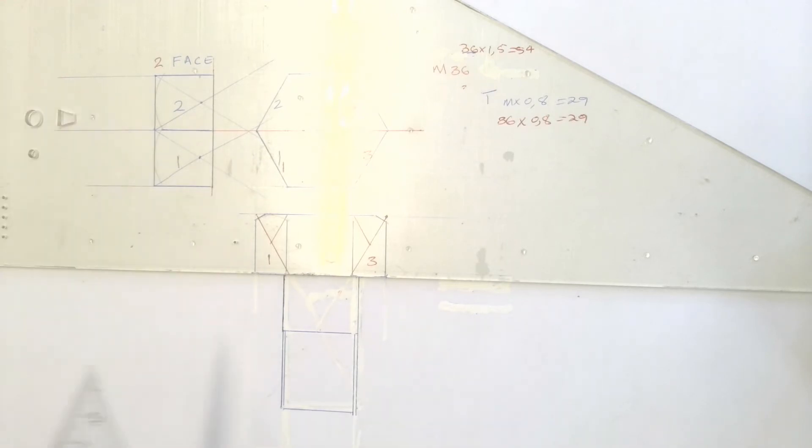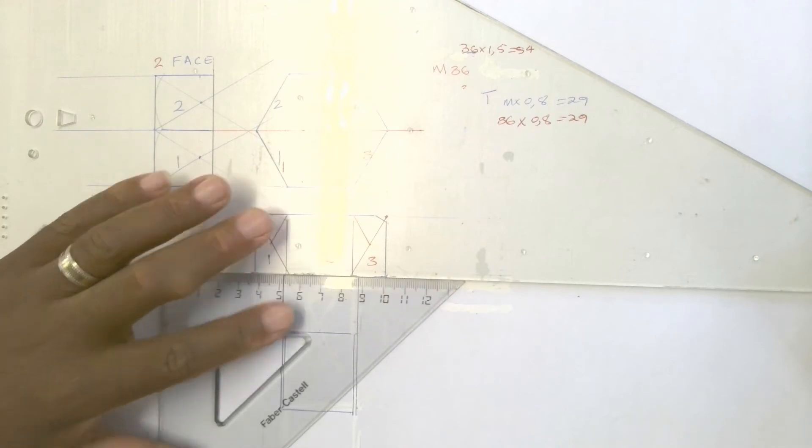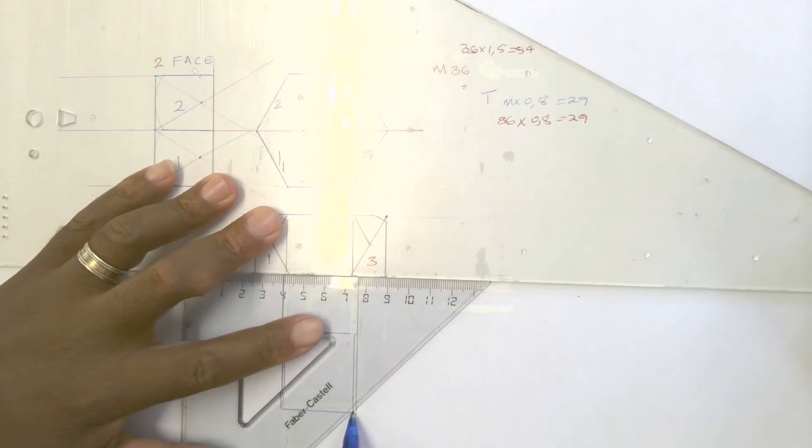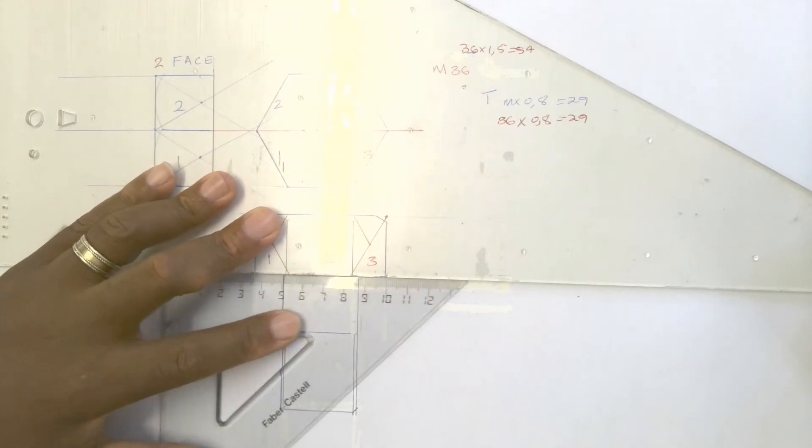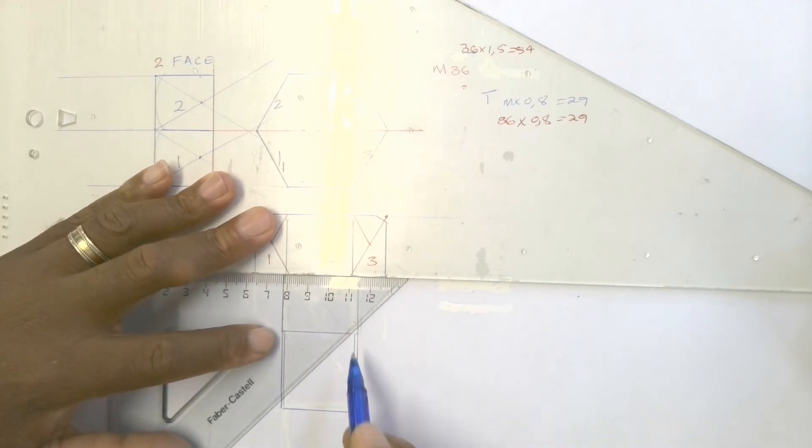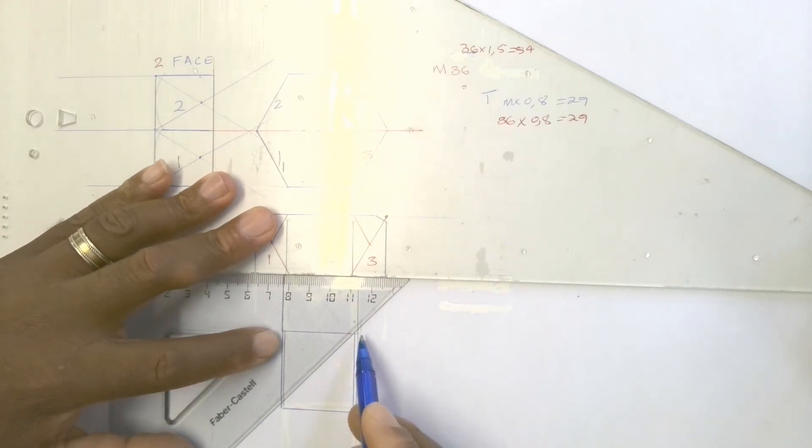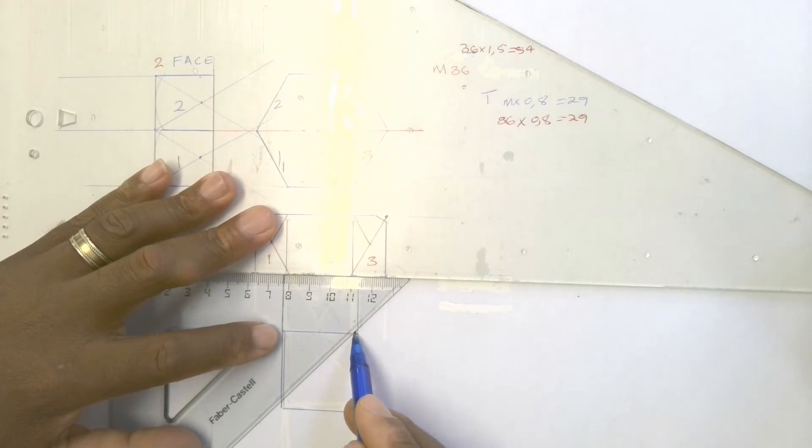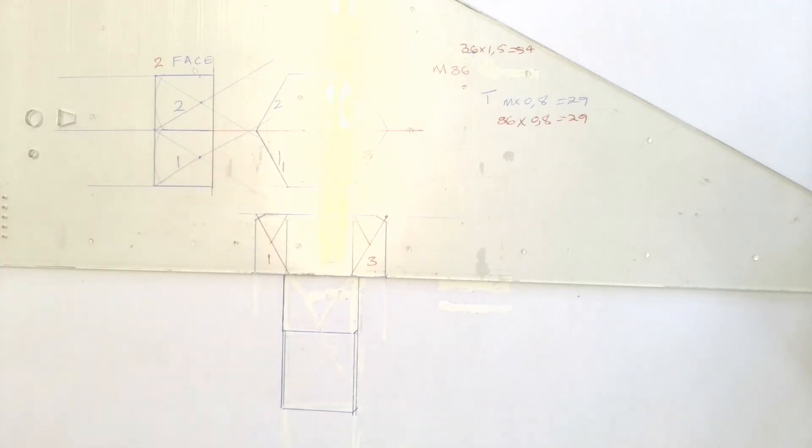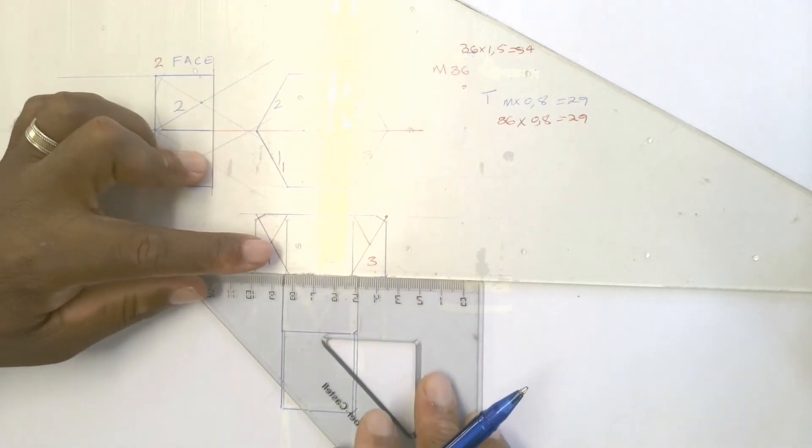It will be chamfered using the 45-degree set square and it starts from the inside line to the outside line, that's 45 degrees. Now here also on top, it starts at the inside of the line at 45 degrees, and that's how it is chamfered.